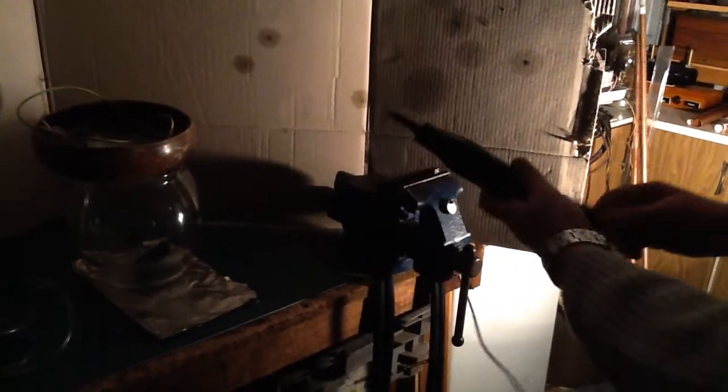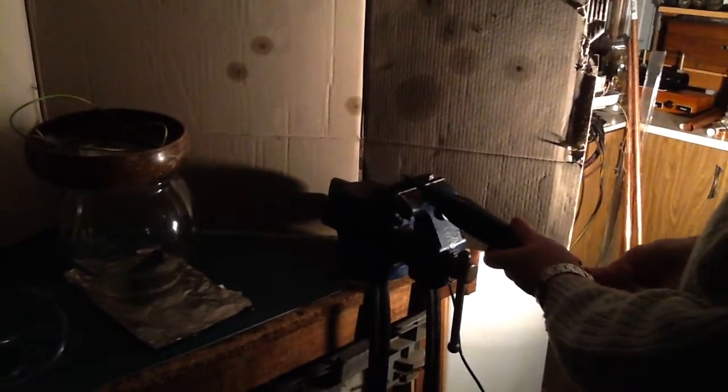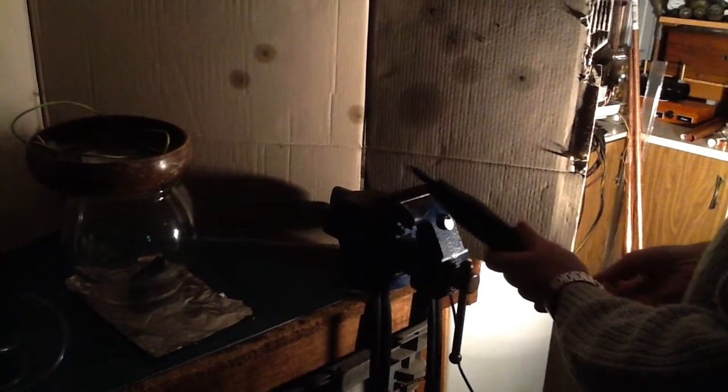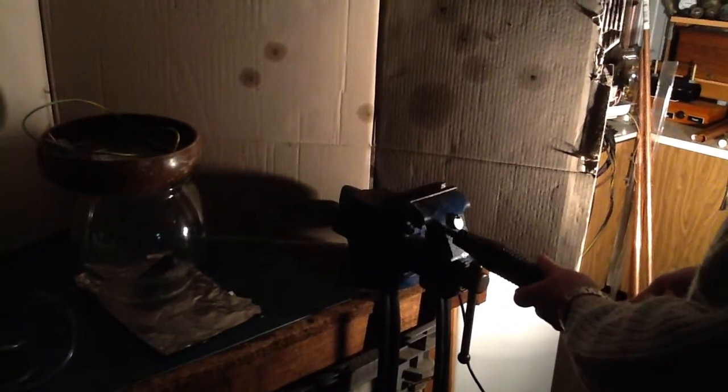Okay, here I have my violet wand, which is a handheld Tesla coil. I'll put a bolt in the end instead of a glass probe and see what kind of spark I can get from that.